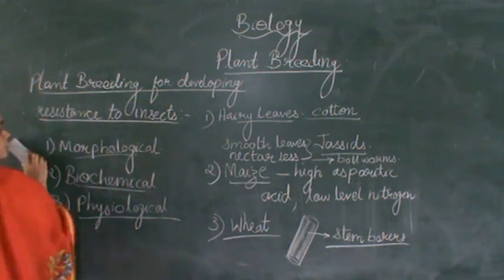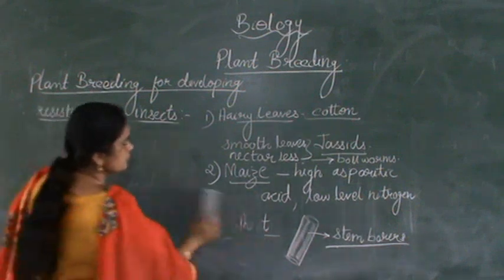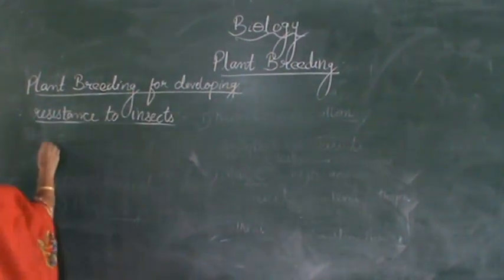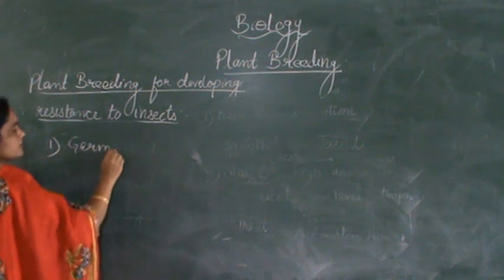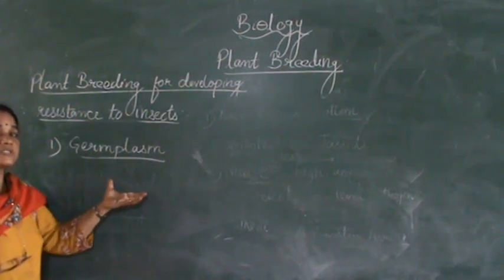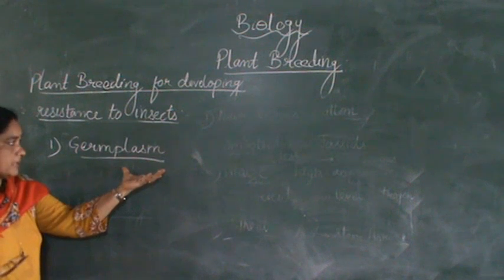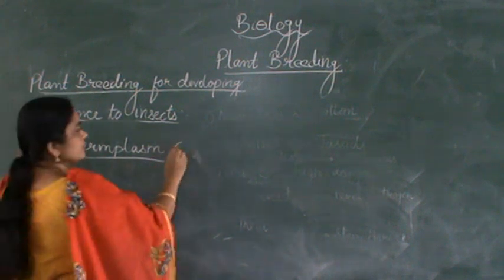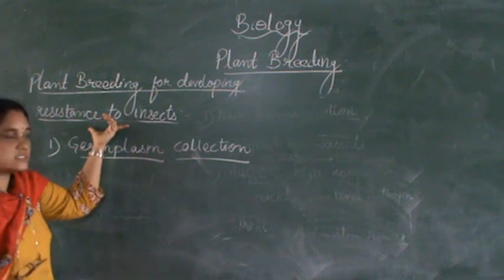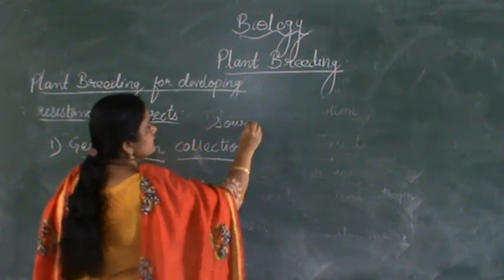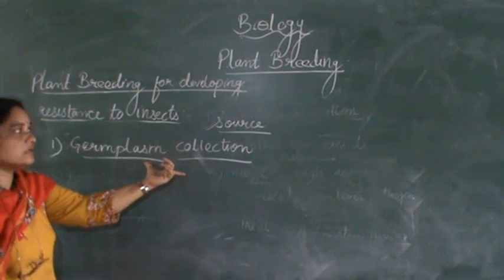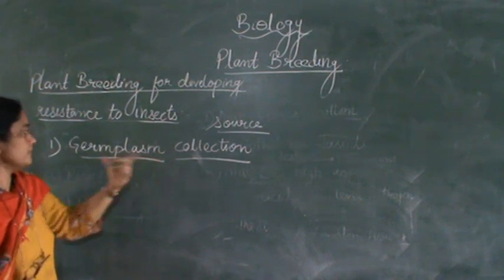For developing resistance, first of all we should have the particular type of plants. The plant can be obtained from the germplasm collection — germplasm is nothing but a collection of all different alleles of a plant which should have a very good collection of all the genes required by the plant. From the germplasm collection itself we can get the source for breeding plants to develop resistance towards insects, and we can modify the genes of the plant for developing a disease-resistant or insect-resistant plant.